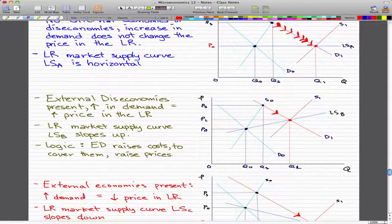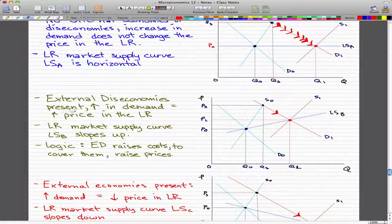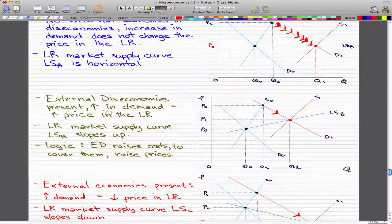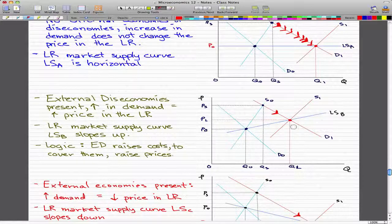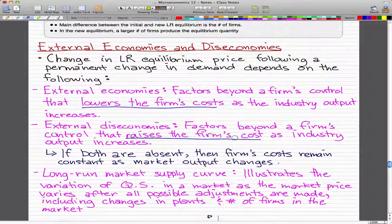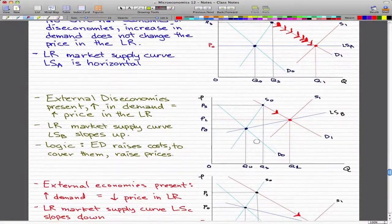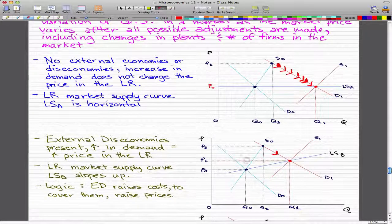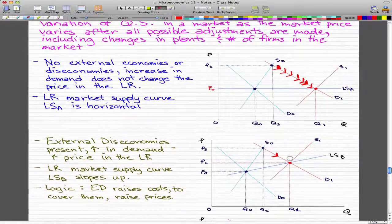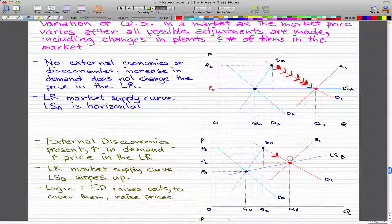The same cannot be said for external diseconomies. When external diseconomies are present, an increase in demand causes an increase in price in the long run. So, the long-run market supply curve, LSB, actually slopes up. That's why I'm telling you to remember the key words - it raises the firm's cost. This upward slope signifies the raising of the firm's cost. The logic is external diseconomies raises cost, and to cover these costs, we have to raise prices.